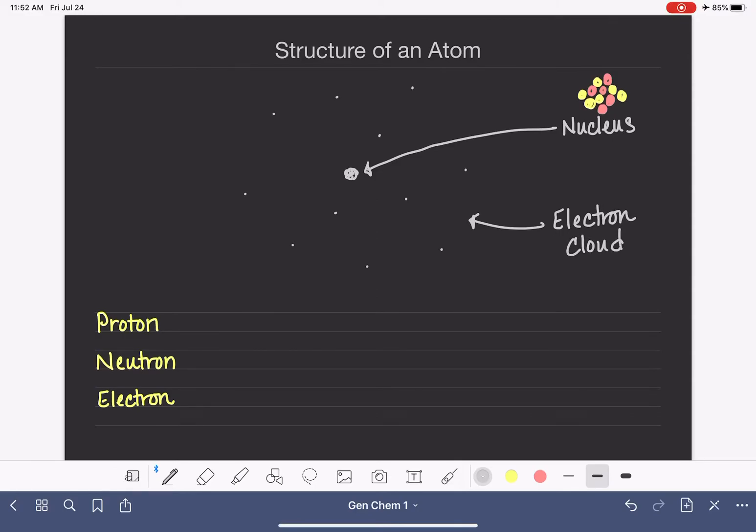A lot of times you'll see kind of like a boundary or an outline drawn to indicate the location of the electrons or the cloud. But I kind of don't like to do that because drawing that boundary implies that there is an outer edge to the atom.